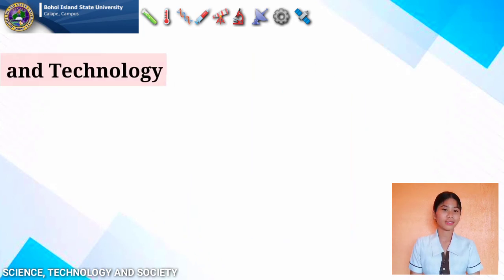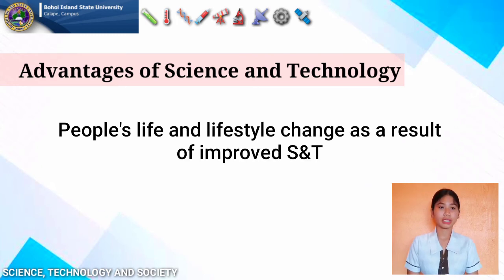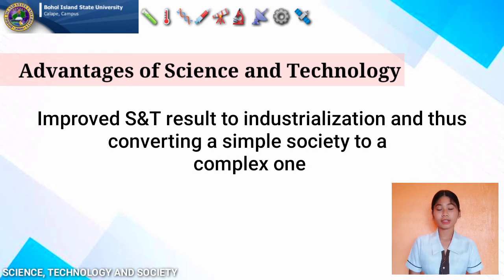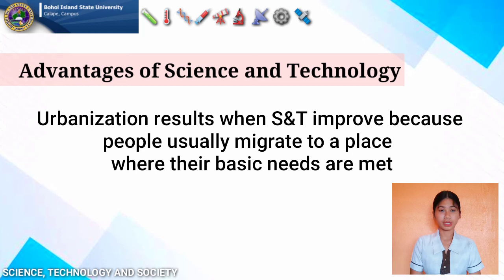Now, the advantages of science and technology in people's lives: science and technology helps people's life and lifestyle change. As a result of improved science and technology, life has become easy and comfortable through these innovations. Improved science and technology results in industrialization, converting a simple society to a complex one. The standard of living has increased with the increase of technology, and urbanization results when science and technology improve, because people migrate to places where their basic needs are met.